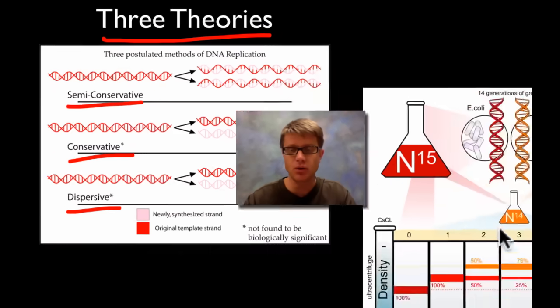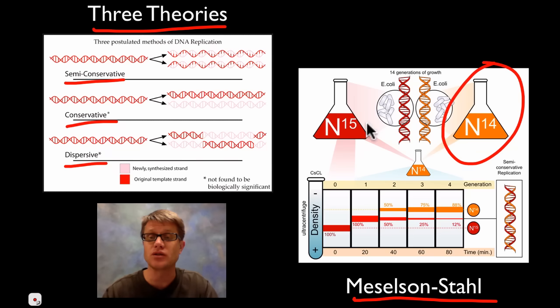And so basically the whole thing was figured out through the Meselson-Stahl experiment. Basically what they used was two different types of nitrogen. Good old run of the mill nitrogen 14 and then nitrogen 15, an isotope that's heavier than nitrogen 14. So basically they bred a bunch of E. coli on nitrogen 15 until all of their DNA was nitrogen 15.